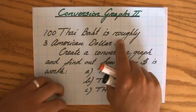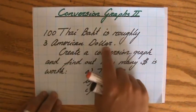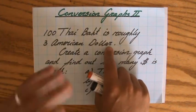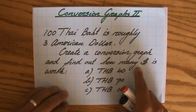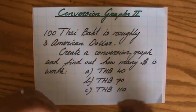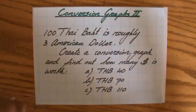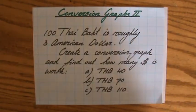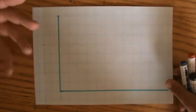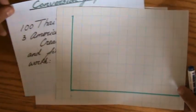100 Thai Baht is roughly three American dollars—I just checked it on the internet. Create a conversion graph and find out how many dollars is worth 40 Baht, 70 Baht, 110 Baht. Now I know some of you say, oh, I don't need a conversion graph to do that. Yes, but it is still necessary that you are able to create those types of graphs, and they can be very useful.